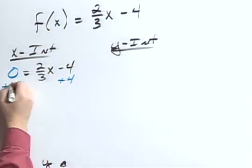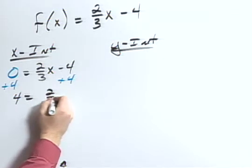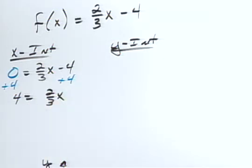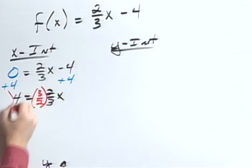Next, add four to both sides. Four equals two-thirds x. Now to eliminate that, I can multiply both sides by the reciprocal. In this case, three-halves.